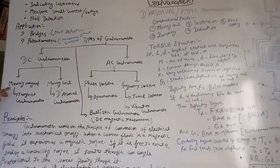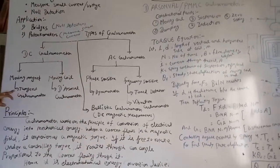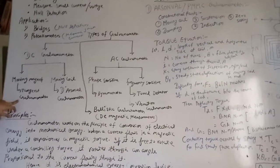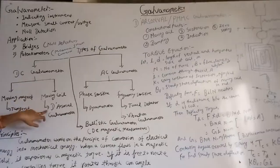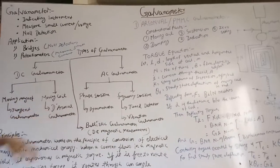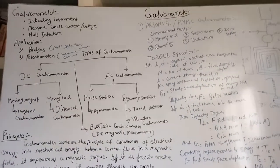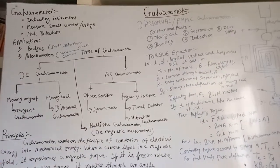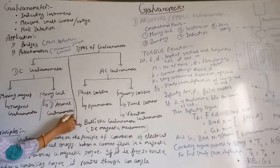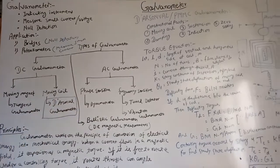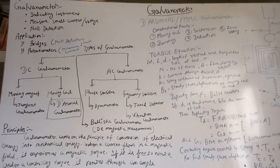Moving magnet galvanometer refers to the tangent galvanometer, and moving coil galvanometer is the D'Arsonval galvanometer. We will study the details of this D'Arsonval galvanometer.